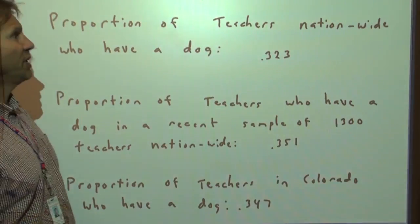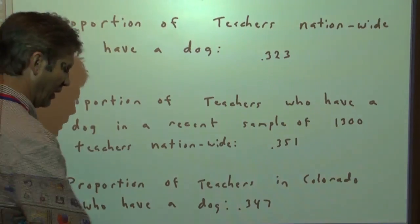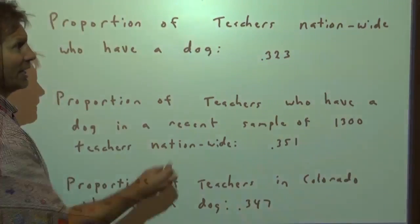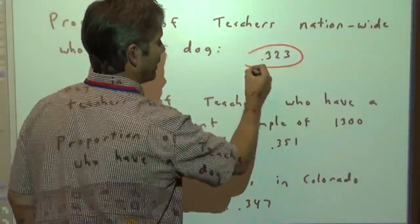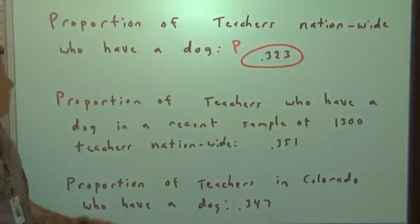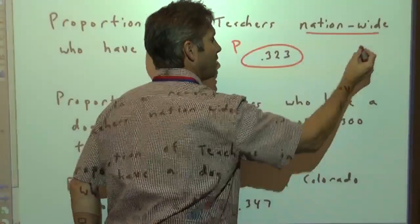What about proportion of teachers nationwide who have a dog? It's .323. Well, that's a proportion, and that's a parameter. That's P, population proportion, because it's from the entire nation. It's a whole population of the U.S.